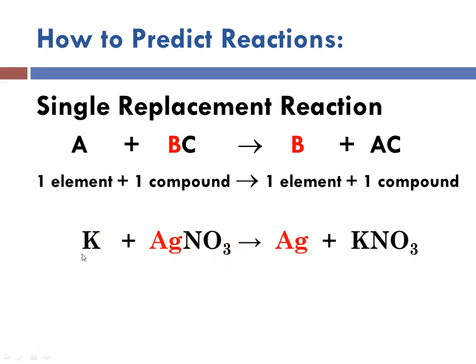An example here is the reaction of potassium with silver nitrate. Potassium is a metal — it's going to form a cation and try to replace silver. And it can: silver will now be in its elemental state, and we'll have a new compound, in this case potassium nitrate.